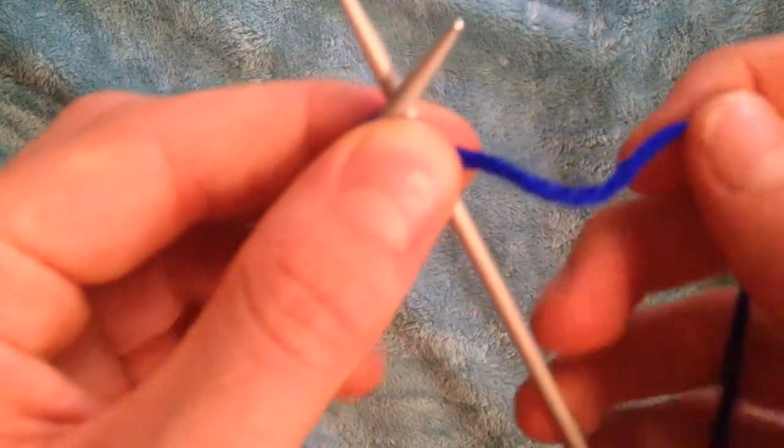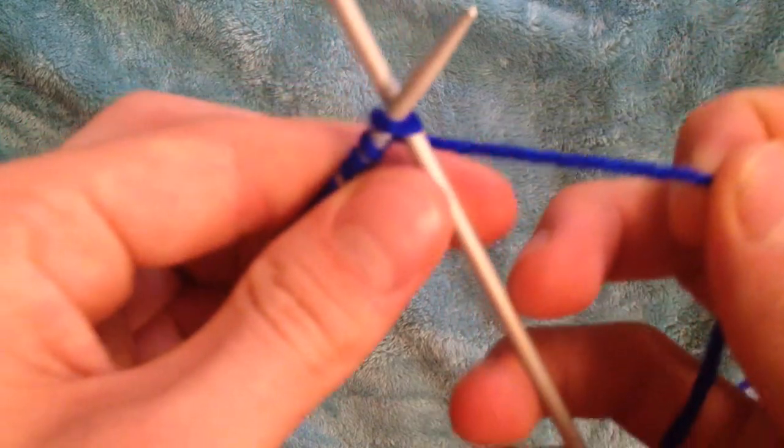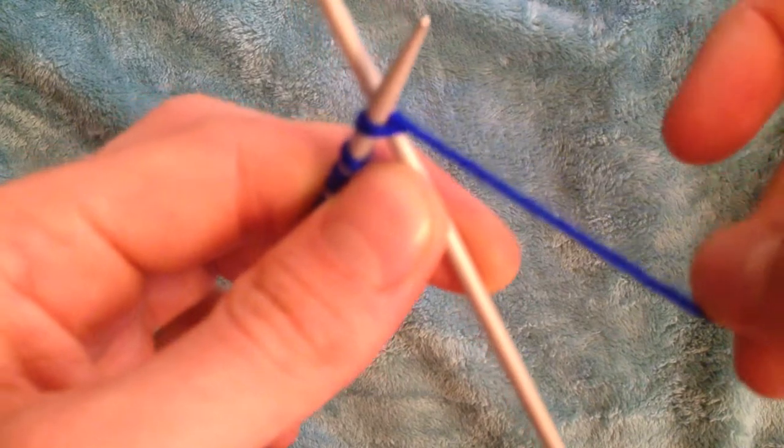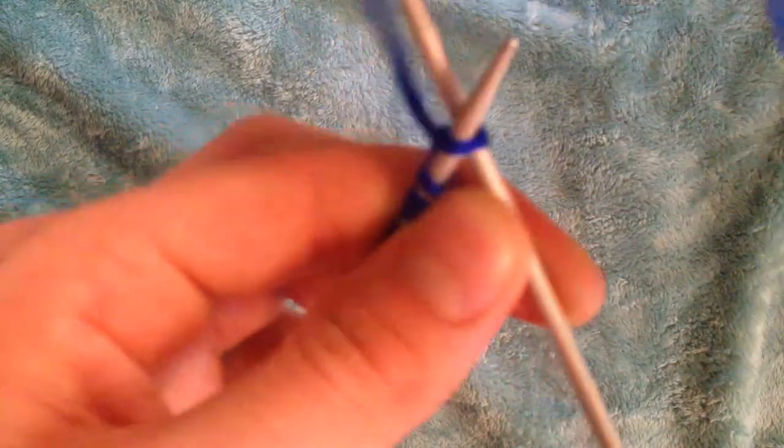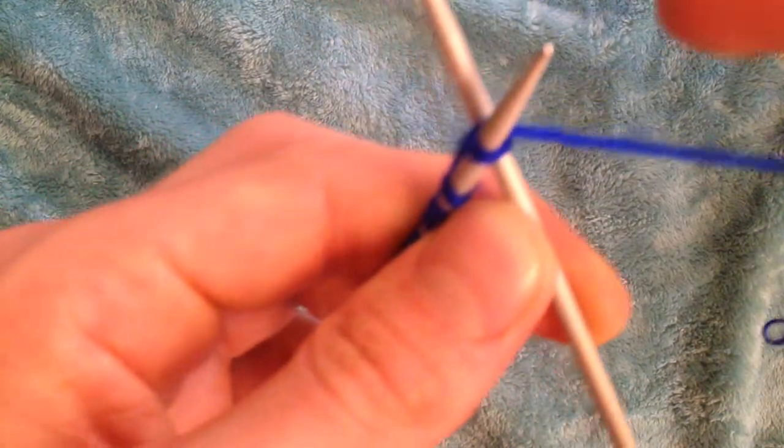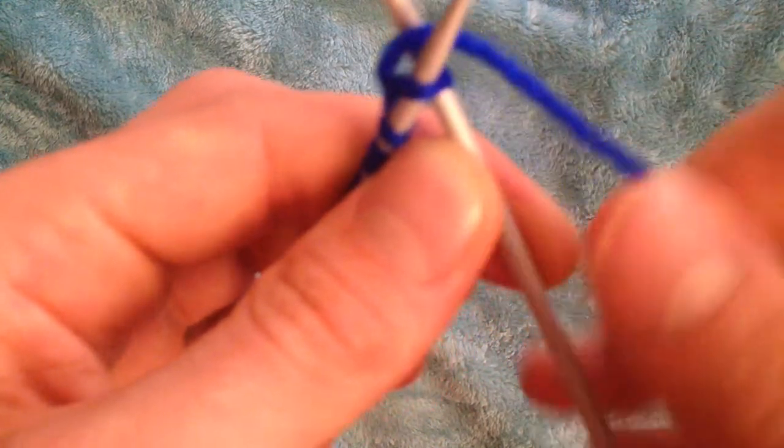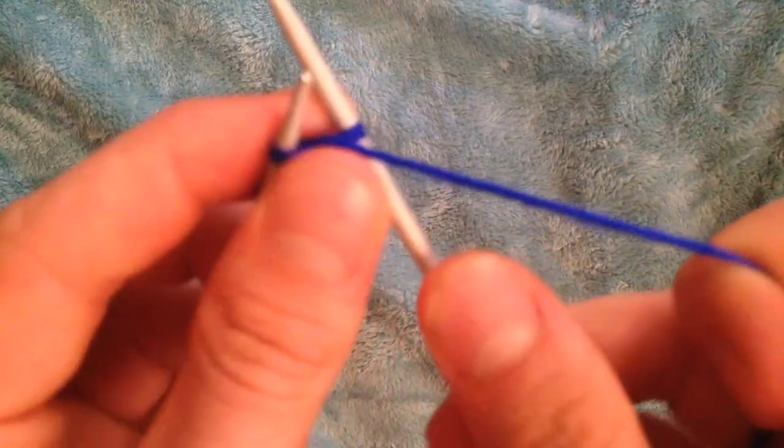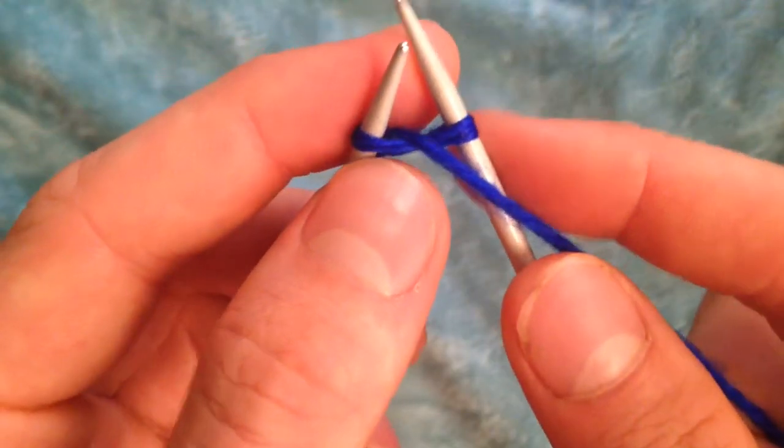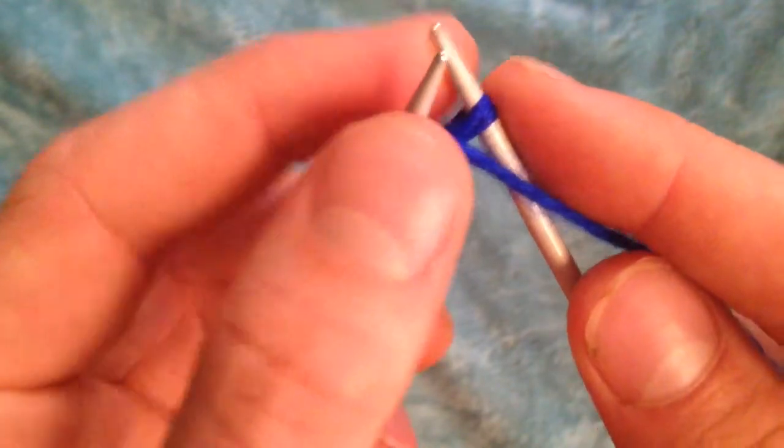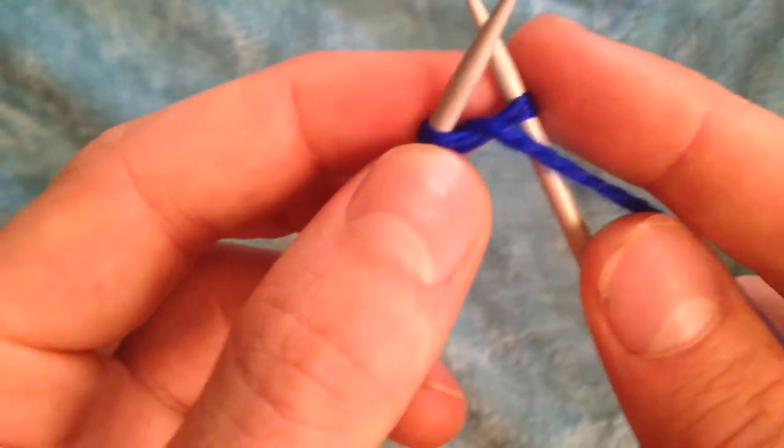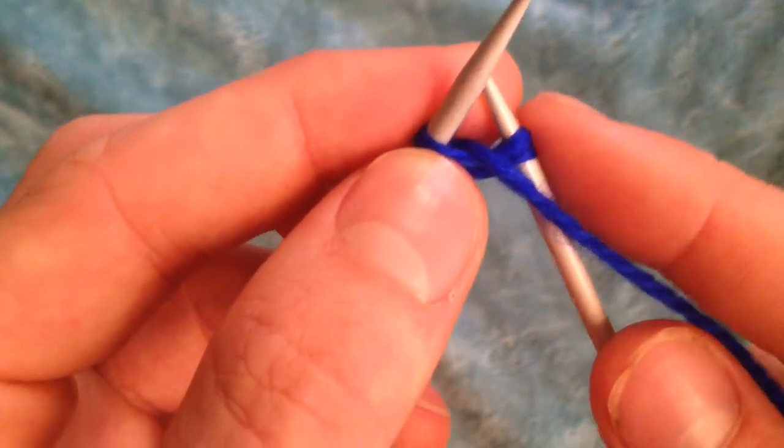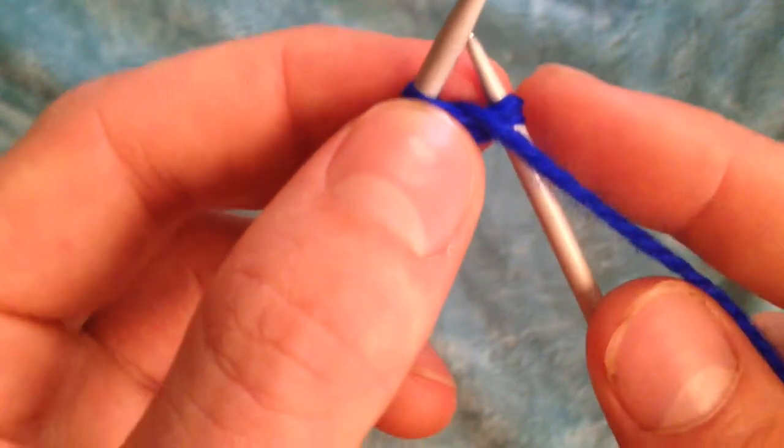And get your other hand to grab this wool and go around the back and between the needles. So, around and between the needles. Then, this step is pretty tricky. You need to pull these apart. Now, with this hand, bring this one up a bit. You're going to slowly slip the needle down, but not too fast, because you'll drop the stitch.